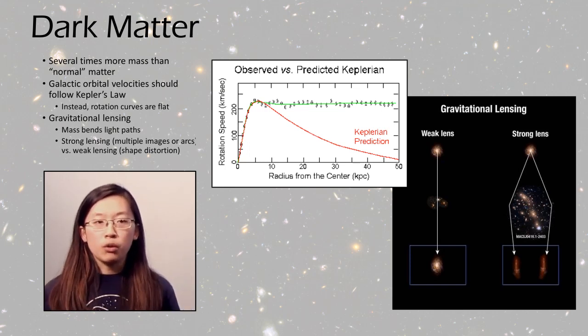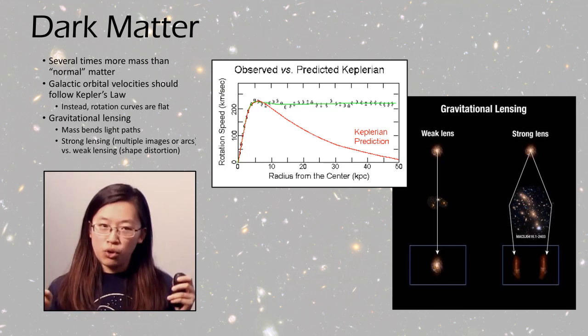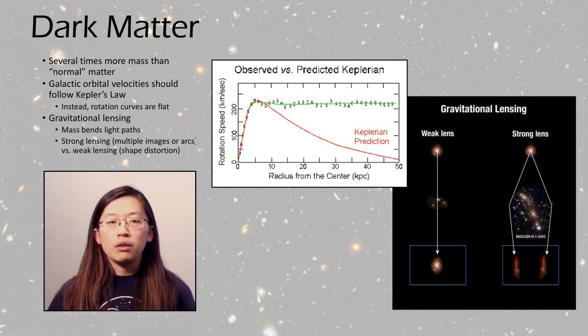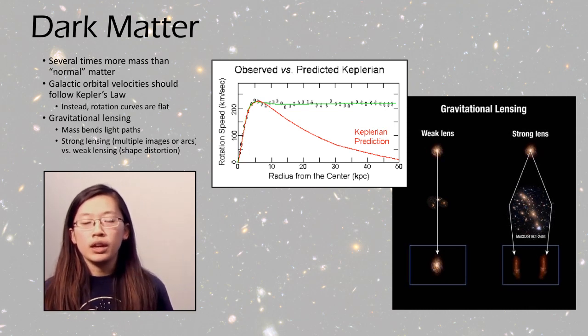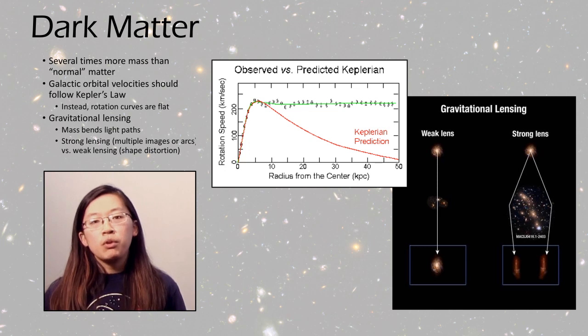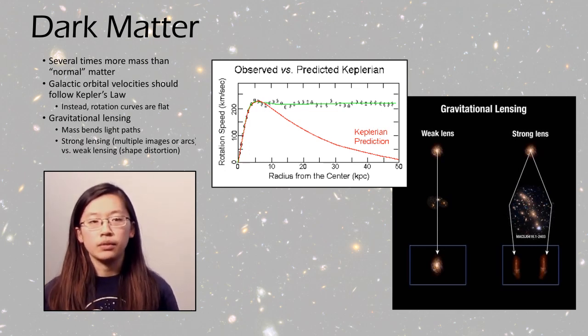Another big topic for this year is dark matter, which makes up actually a lot more of the universe than normal matter. So dark matter was discovered by Vera Rubin when she found that instead of following Kepler's law, the orbital velocities of stars around the center of the galaxy actually stayed pretty flat, which meant that there must be some kind of invisible mass causing this.